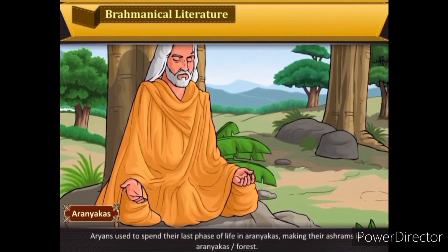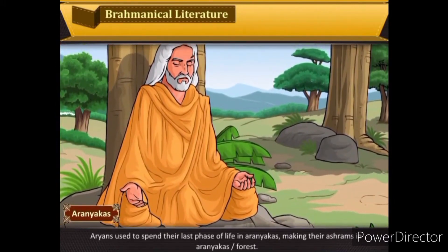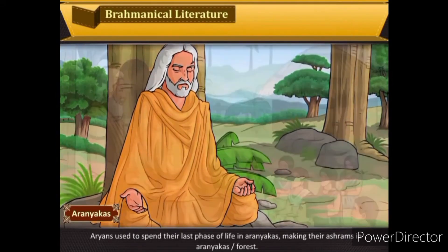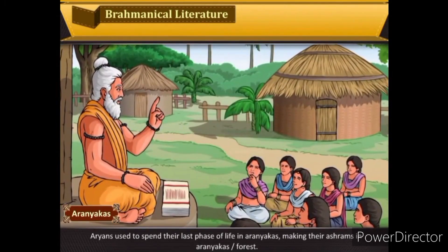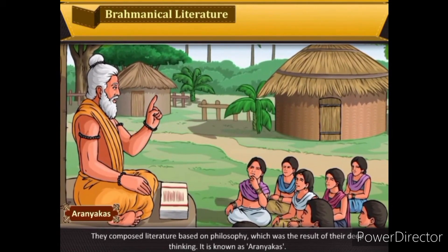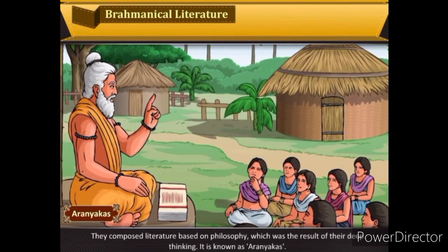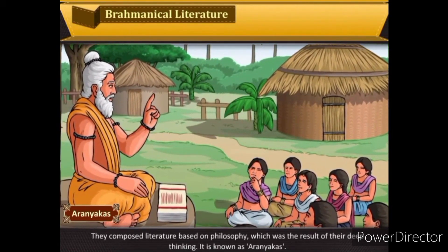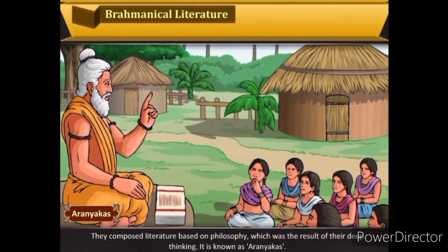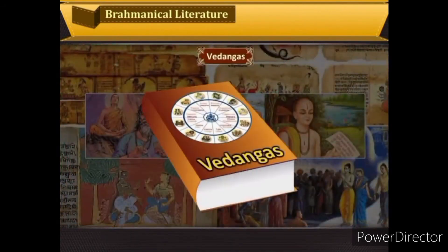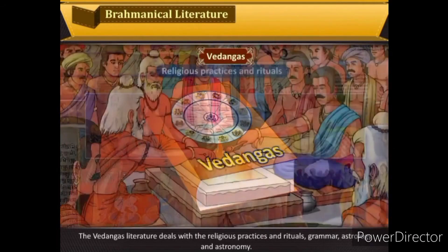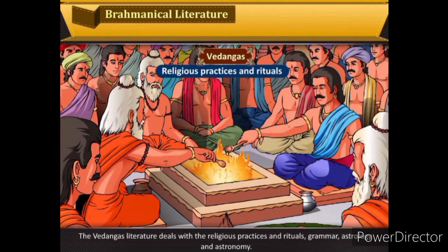Aryans used to spend their last phase of life making ashrams in Aranyakas, or forests. There they composed literature based on philosophy, which was the result of their deep thinking. This is known as Aranyakas. The Vedangas literature deals with religious practices, rituals, grammar, astrology and astronomy.